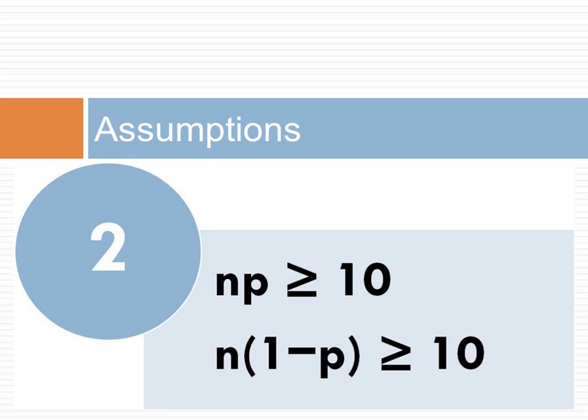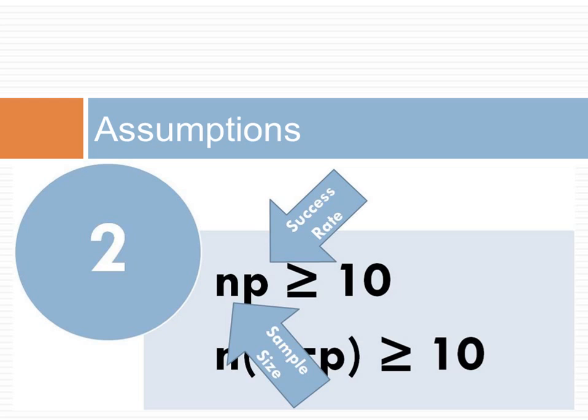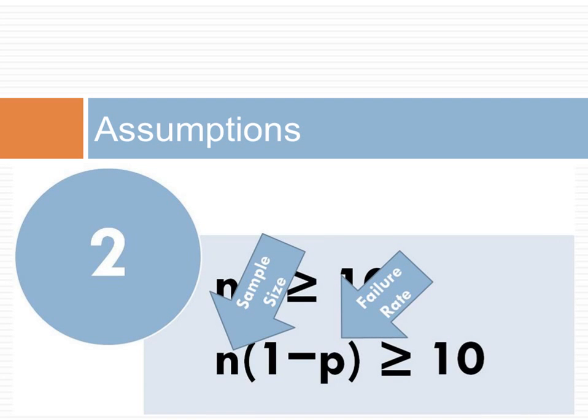The first formula says that the sample size n times the probability of success, shown as p, is greater than 10. Here, p is the population rate of success. This population rate can be estimated as the sample rate or as the hypothesized null value. The second formula says that the sample size n times the probability of failure, shown as 1 minus p, is greater than 10. Here again, p is estimated from either the sample rate or from the hypothesized population rate.